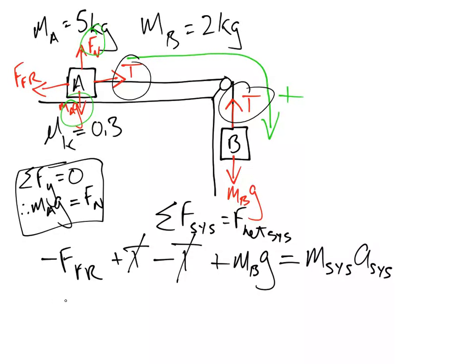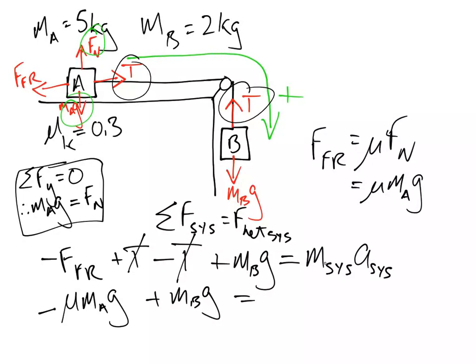So the only things we're left with here are negative force of friction. Now, what is force of friction in this case? Let's not forget that force of friction, the definition is mu Fn. And in this case, Fn equals Mg. We already know that. So we go mu, which M? A. All right. So let's substitute that in. Mu MAg plus MBg equals, now the total mass of the system is MA plus MB times the acceleration.